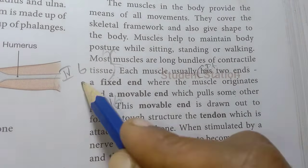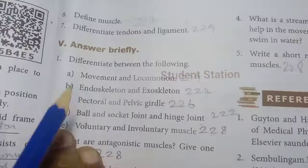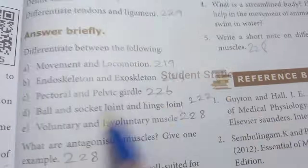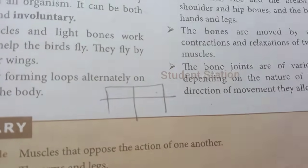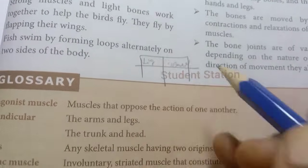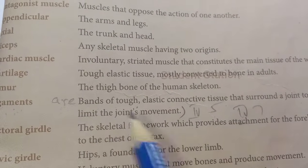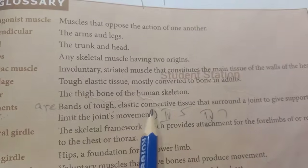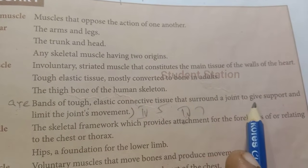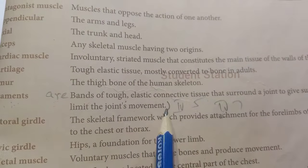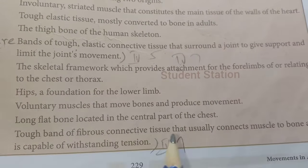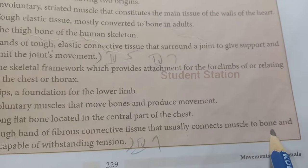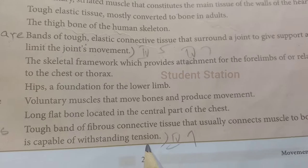Question 7: Differentiate tendons and ligaments. Page 229. Ligaments are bands of tough elastic connective tissue that surround a joint to give support and limit the joint's movement. Tendons are a tough band of fibrous connective tissue that usually connects muscle to bone and is capable of withstanding tension.